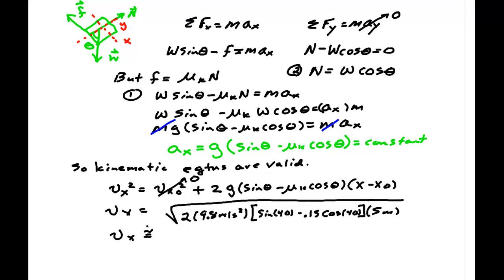2 times 9.8 times sine of 40 minus 0.15 times cosine of 40, and then times 5.